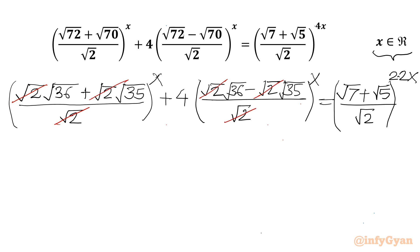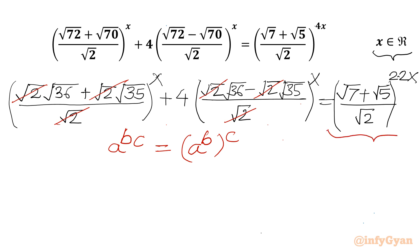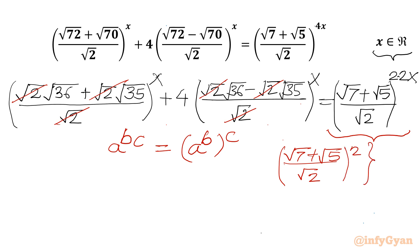Now I will write one exponential property: a^(b·c) can always be written as (a^b)^c. For the RHS I will write it as (√7 + √5) divided by √2, whole squared, then whole power 2x.